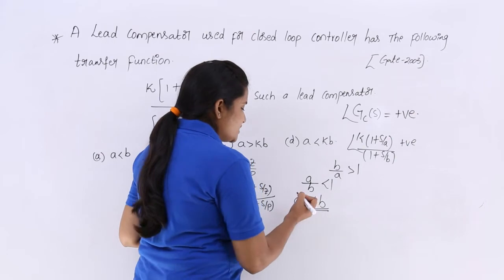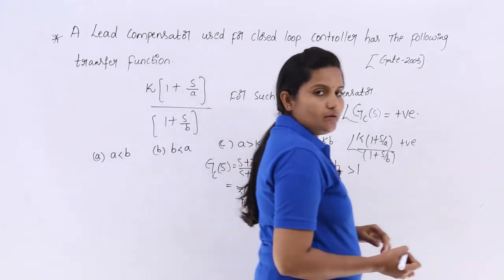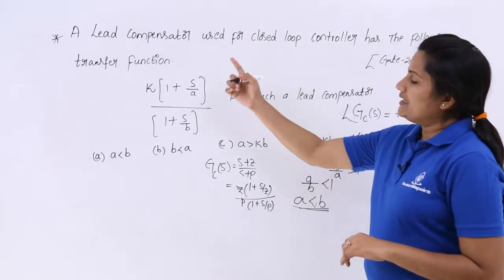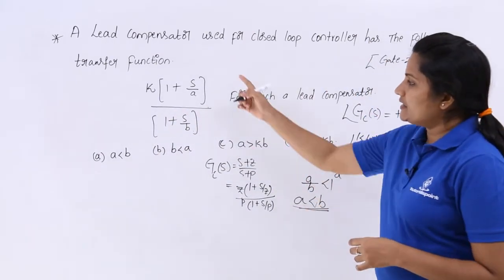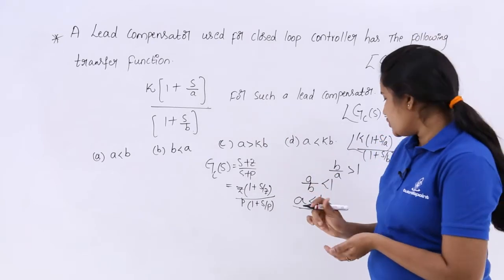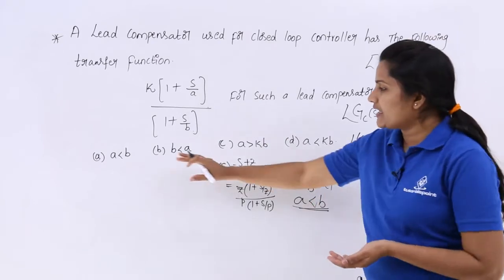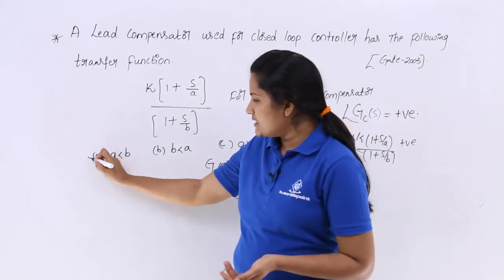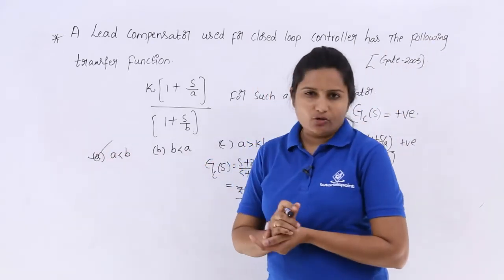So the condition for a lead compensator with this transfer function is A less than B. Therefore, option A is the correct answer.